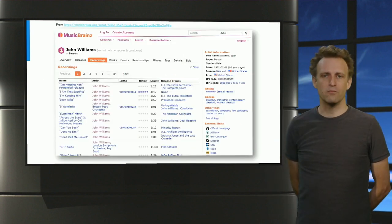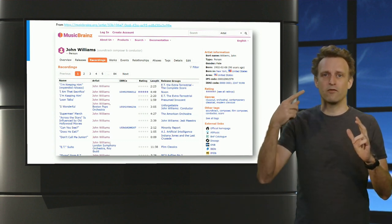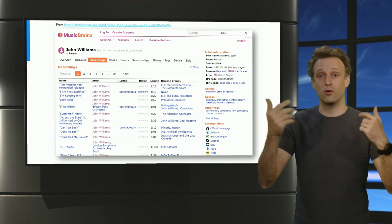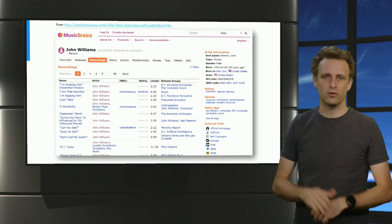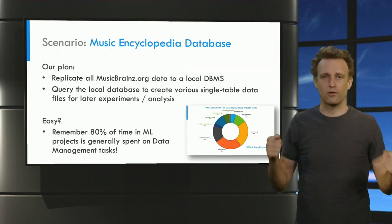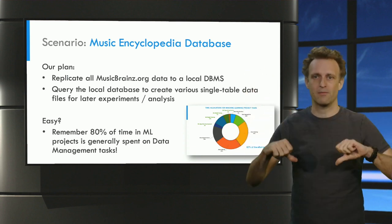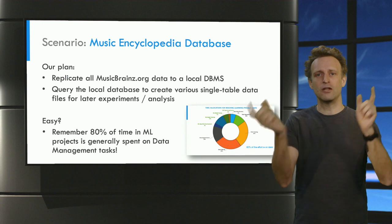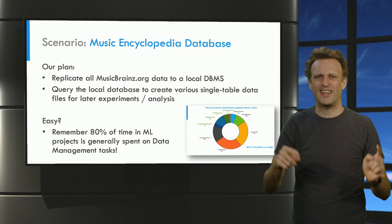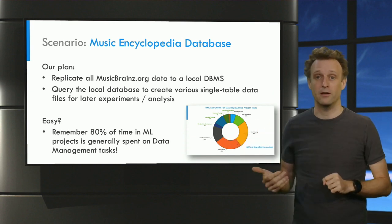This is an example page of the MusicBrainz website showing the detailed information for the composer John Williams. We see a list of all John's recordings and some extra metadata about him as a person. Our plan for today is to replicate all the MusicBrainz data into a local database management system, then run SQL queries to create various single-table data files for later experiment and analysis, for example using Python and Pandas.